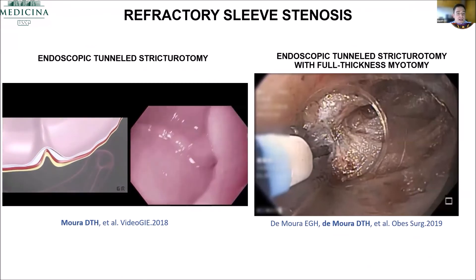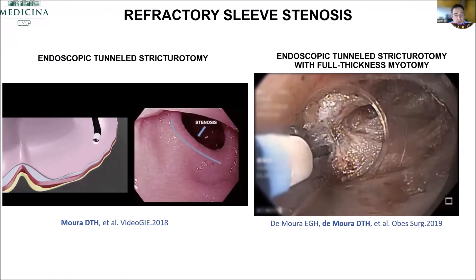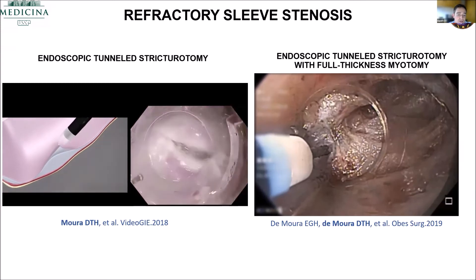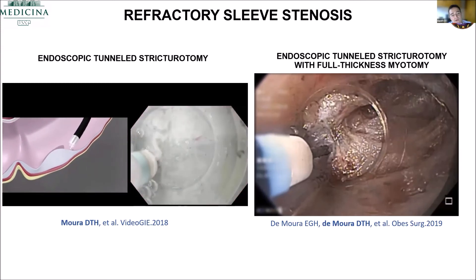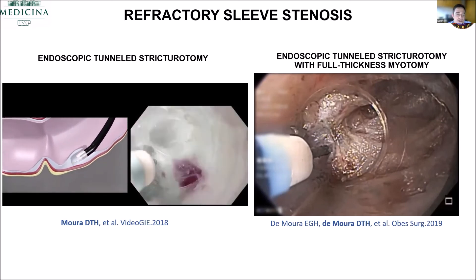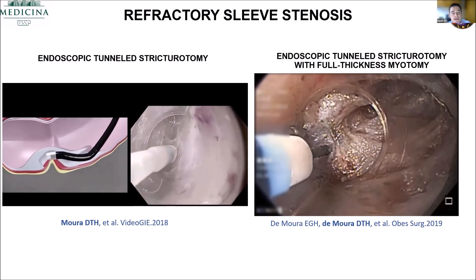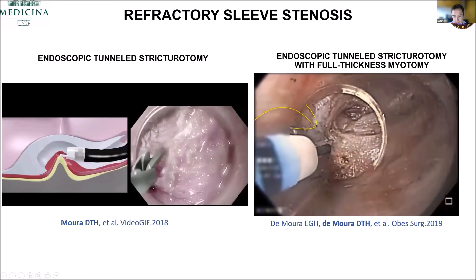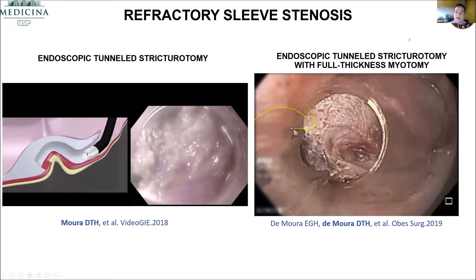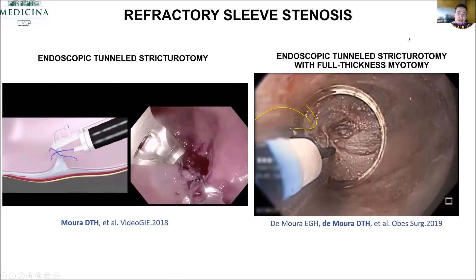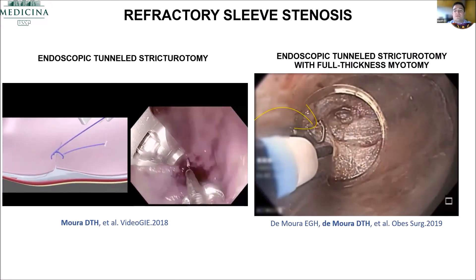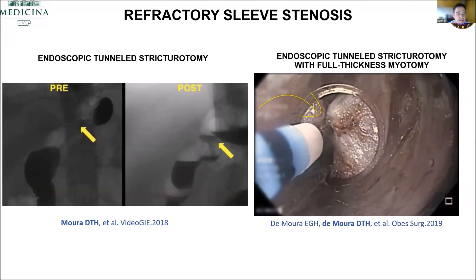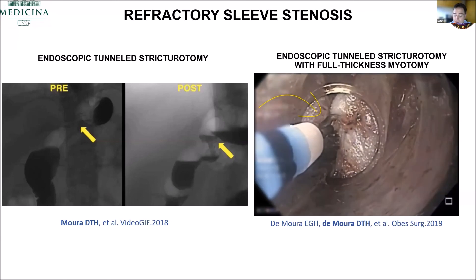This is the video about the endoscopic tunneled stricturotomy created by Chris Thompson. We inject for submucosal tunneling, and then when we see the fibrotic tissue, we just cut it. At the end, we close the mucosal incision, similar to a G-POEM. Eduardo Moura here in Brazil copied the technique but did the full-thickness myotomy — a more aggressive approach. And to be honest, now we are doing the more aggressive approach and it really works very well.